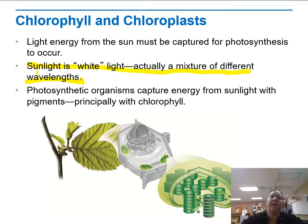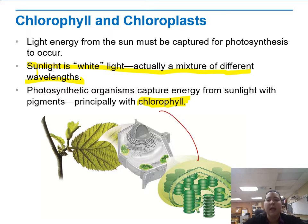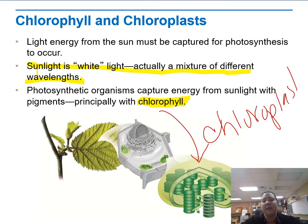The principal pigment in photosynthesis is chlorophyll. That's what makes green plants green. Chlorophyll is actually located in the chloroplast, and what it does is harness the sunlight to then drive photosynthesis.